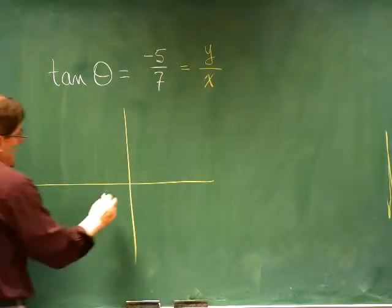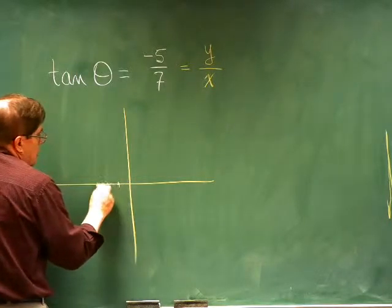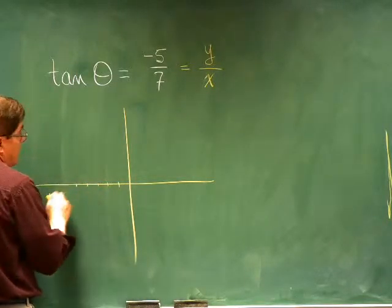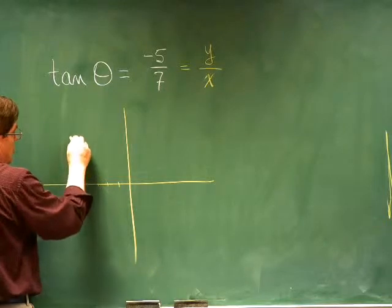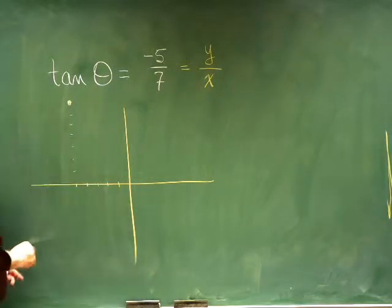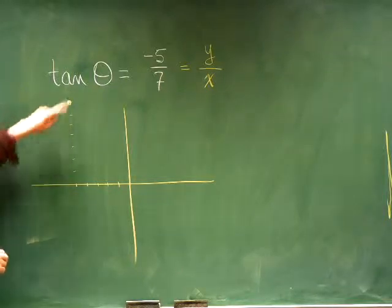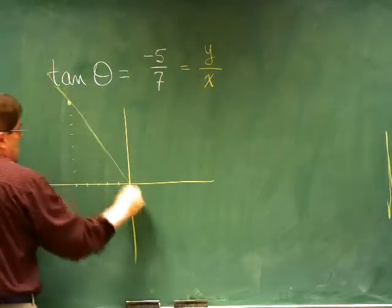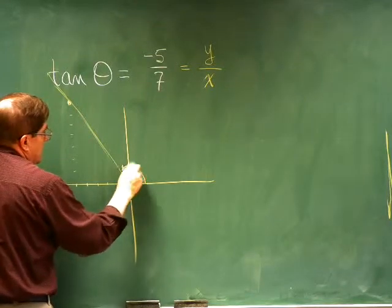So it could be over here at the point negative five, seven. So that's one possibility for where the terminal side could be. So there's one possibility for theta.